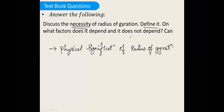Define it — define the radius of gyration. It is the distance between the center of mass of the body and the axis of rotation. It is a perpendicular distance, denoted by k and measured in meters.